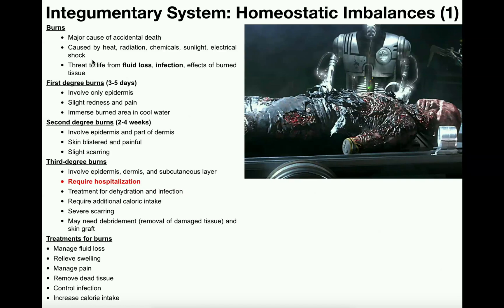So first of all, what is a burn? The technical definition is that a burn is damage to one or more layers of the skin caused by heat, radiation, chemicals, sunlight, or electrical shock. Most people think of burns from heat like fire, but sunlight can cause first and second degree burns — third degree from sunlight is very rare. Chemical burns are also possible; for example, sulfuric acid in a lab setting can burn you badly.